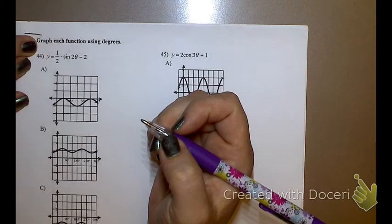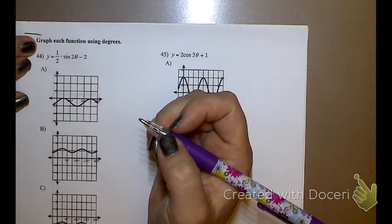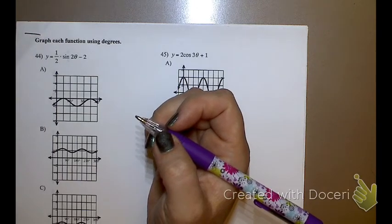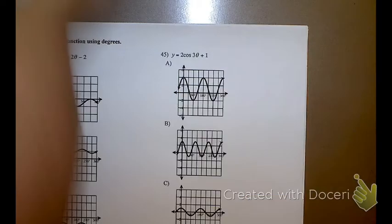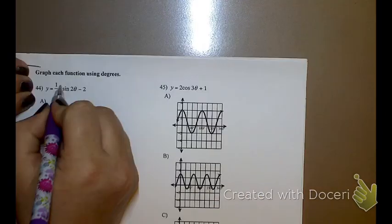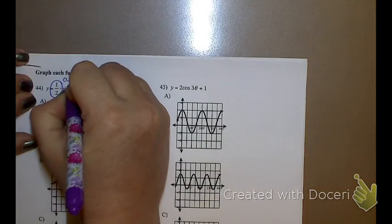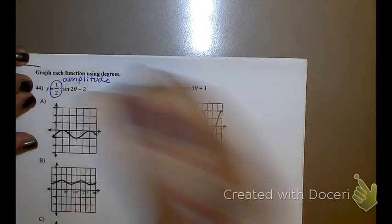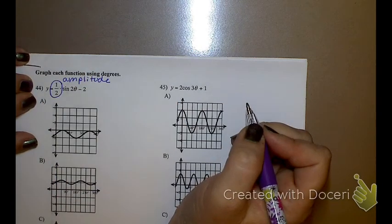So when we are graphing, we have a couple numbers that we need to notice. Notice that we have a number in front. Does anyone remember what that number in front is called? The amplitude. Remember that? That tells you how far up and how far down it goes from the midline.